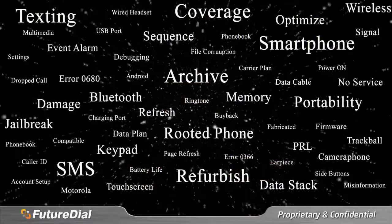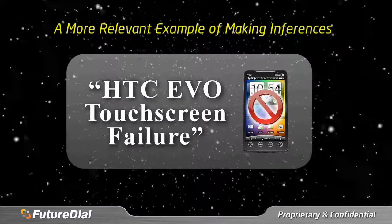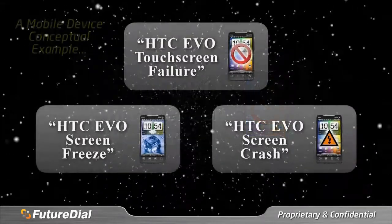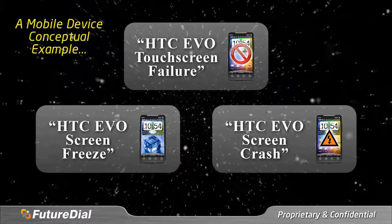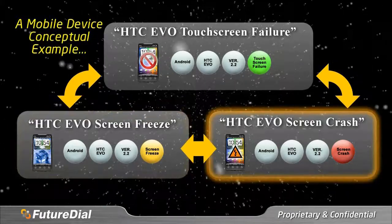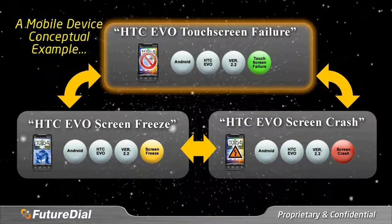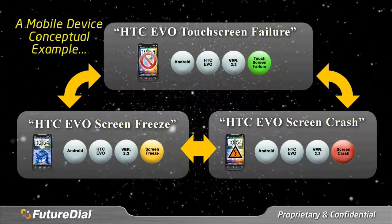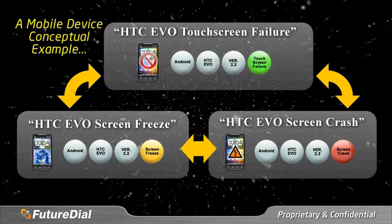To provide a more relevant example, let's look at a problem concept which is related to mobile devices. Let's take HTC Evo Touchscreen Failure as a concept. There are many other concepts out there that could be related to this one. For example, two related concepts might be HTC Evo Screen Freeze or HTC Evo Screen Crash. Notice how HTC Evo Screen Freeze and HTC Evo Screen Crash are almost identical, and thus an inference can be made that they are related in some degree to the first HTC Evo Touchscreen Failure concept, and yet they also differ in the attribute of Crash or Freeze. The Ugram clusters making up these problem concepts are interconnected to comprise a concept's meaning. Our system analyzes these concepts and infers relationships between them in order to serve up descriptions of problems and solutions.